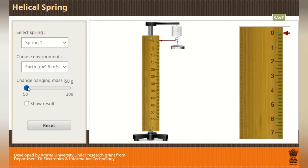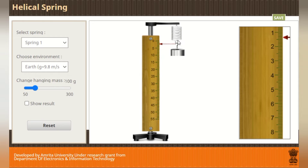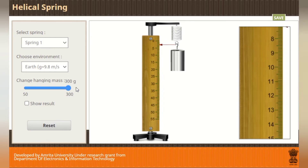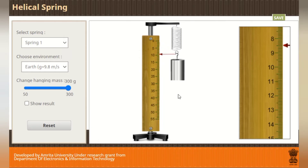Now let's go to our dynamic method. In the dynamic method, we attach half a kilogram to the spring, then pull it vertically downward and release it. We record the time for 25 vibrations. We repeat this for increasing masses up to 250 grams total, recording the time for each corresponding mass. Then we find the mean time period and plot a graph between load M along the x-axis and T² along the y-axis.